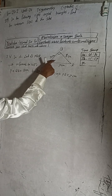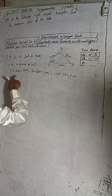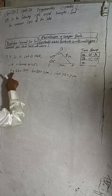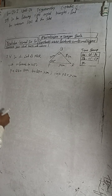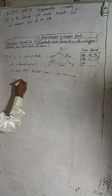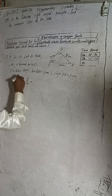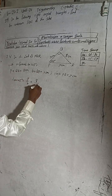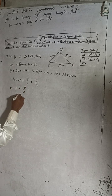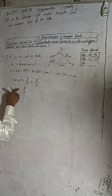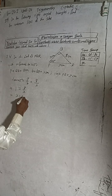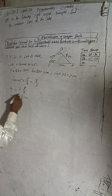To find the base x, we use the relation between perpendicular and base, which is tan. So tan 45° = P/B = 8/x. Since tan 45° = 1, we have 1 = 8/x. Cross-multiplying gives x = 8 cm.